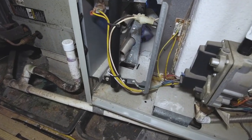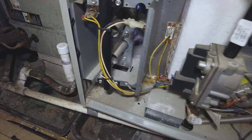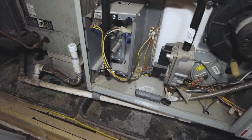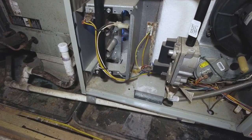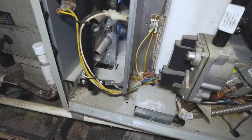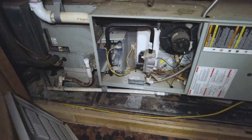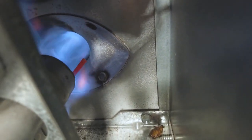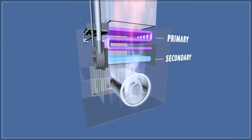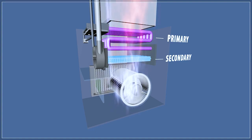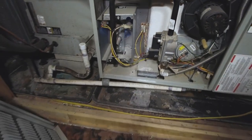Hey, welcome back. So in this video, I'm just covering a job I was at earlier this week. I found a crack in the heat exchanger. It's just a quick demonstration of how the flame looks whenever there's a crack in the heat exchanger and the blower fan comes on. It causes the flame to become more turbulent and distorted, just based off of the air actually infiltrating the internal portion of the heat exchanger.